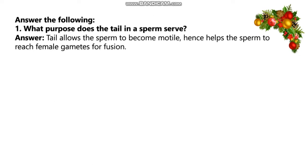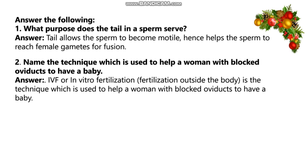What purpose does the tail in a sperm serve? The answer is: the tail allows the sperm to become motile, hence helping the sperm to reach the female gamete for fusion. Name the technique used to help a woman with blocked oviducts to have a baby — the answer is IVF or in vitro fertilization, which is fertilization outside the body.